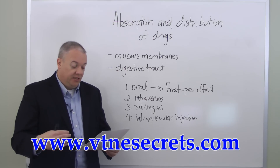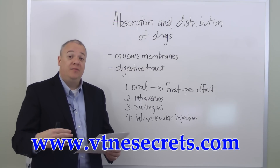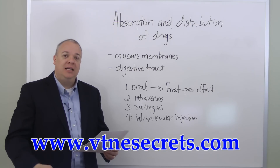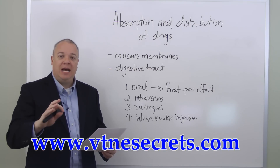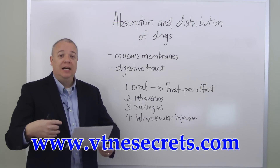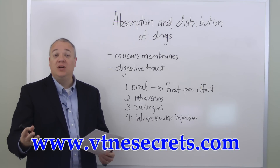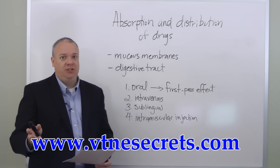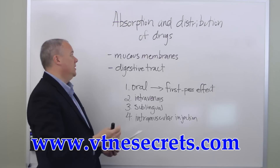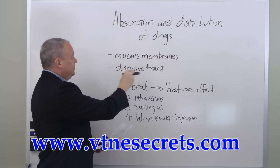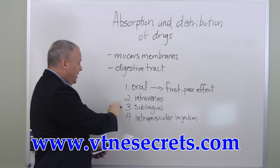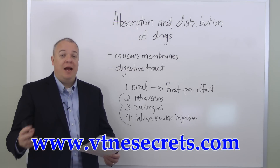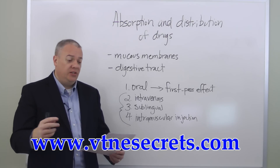The liver metabolizes the drug using biochemical processes, which prevents a good deal of the original drug from even entering the systemic circulation. So it's taken orally, passed through the digestive tract into the intestines, passed to the liver, metabolized, and then sent out. By that point, much of the original drug never enters the systemic circulation and therefore doesn't get out and do what it needs to do. So while oral administration is perhaps the easiest method, it's the least efficient way for the absorption and distribution of drugs.